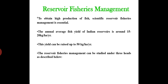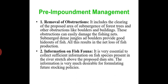To obtain high production of fish, scientific reservoir fisheries management is essential. The annual average fish yield of Indian reservoirs is around 15 to 20 kilograms per hectare per year, and this yield can be raised up to 50 kilograms per hectare per year. Reservoir fisheries management can be studied under different heads, starting with pre-impoundment management.